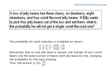A box of jelly beans has 3 cherry, 6 blueberry, 8 strawberry, and 4 vomit flavored jelly beans. If Billy wants to pick 4 jelly beans out of the box and eat them, what is the probability he will not get a single vomit flavored one? The probability for each selection is multiplied as shown: 16/20 times 15/19 times 14/18 times 13/17 equals 43,680 divided by 116,280, which equals 364 out of 969. Remember that as one jelly bean is chosen, the number of non-vomit beans and the total number of beans both decrease by 1, changing the probability for the next drawing. Thus, the answer is D, 364 divided by 969.